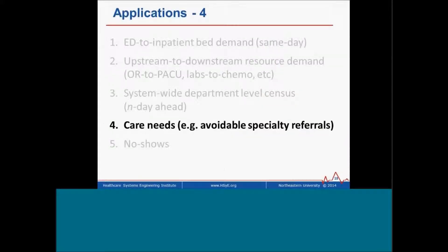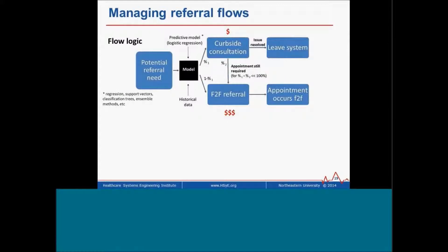Let me switch gears and talk about primarily the fourth application, and maybe a little bit the fifth. Here's the general context around referrals. Our testbed to date has been neurology subspecialty referrals. Reading the flowchart left to right: a primary care provider indicates a need for a referral to a subspecialist. Then there's a black box that decides whether this individual really needs a face-to-face referral — which costs a fair amount of money, often retrospectively wasn't needed, and creates an access problem. So the question is: should this patient go to referral, or could they be handled in some other way?